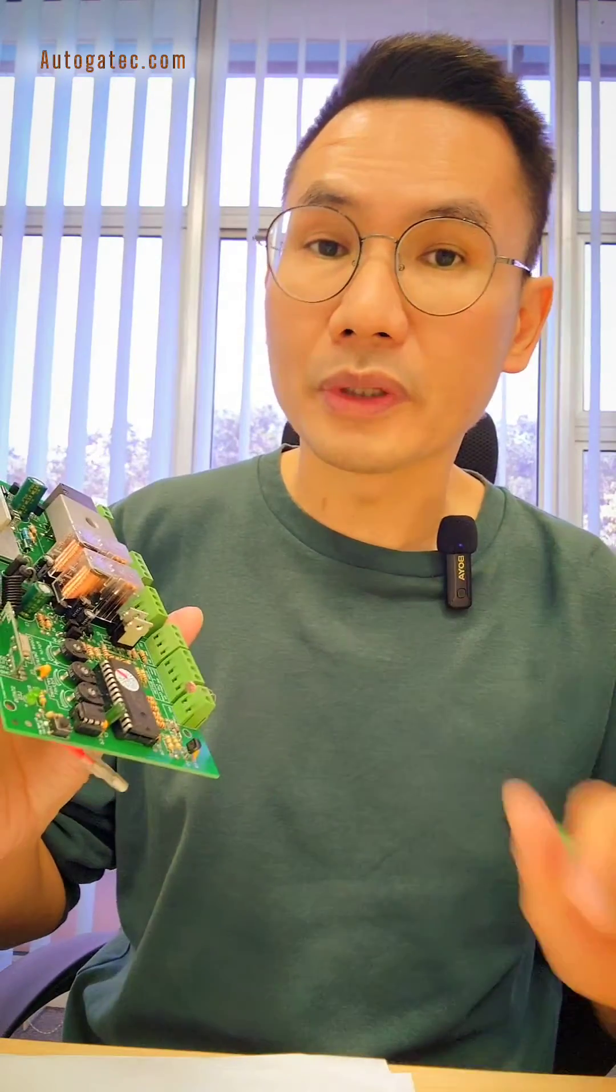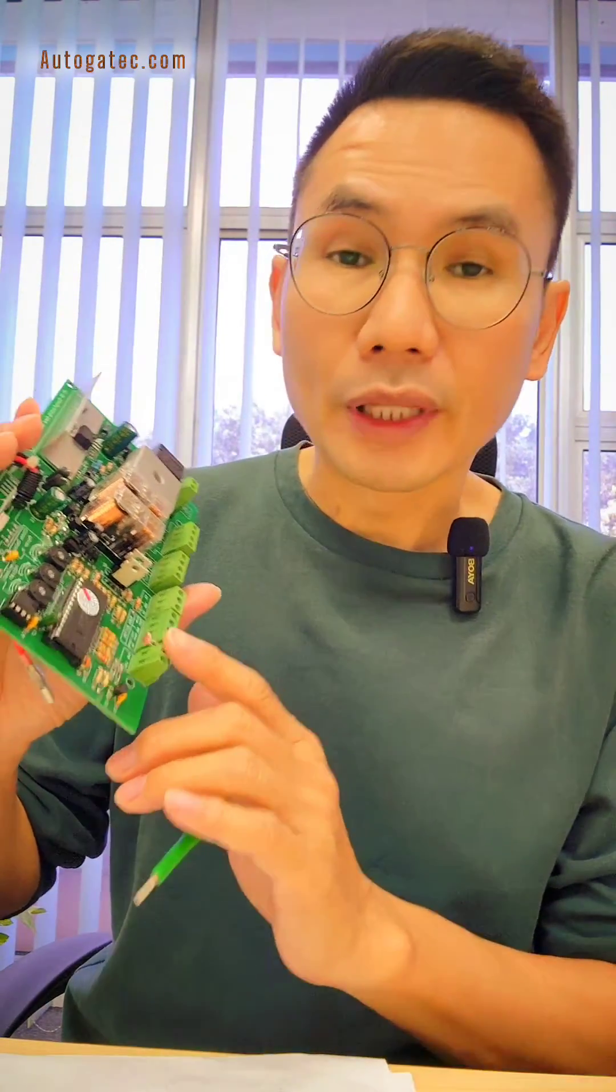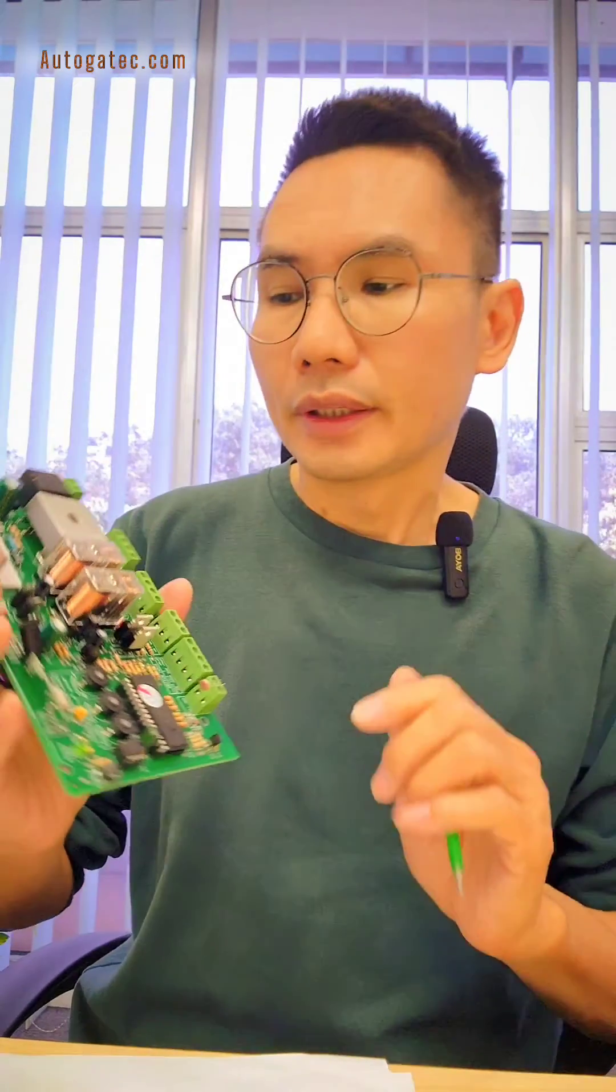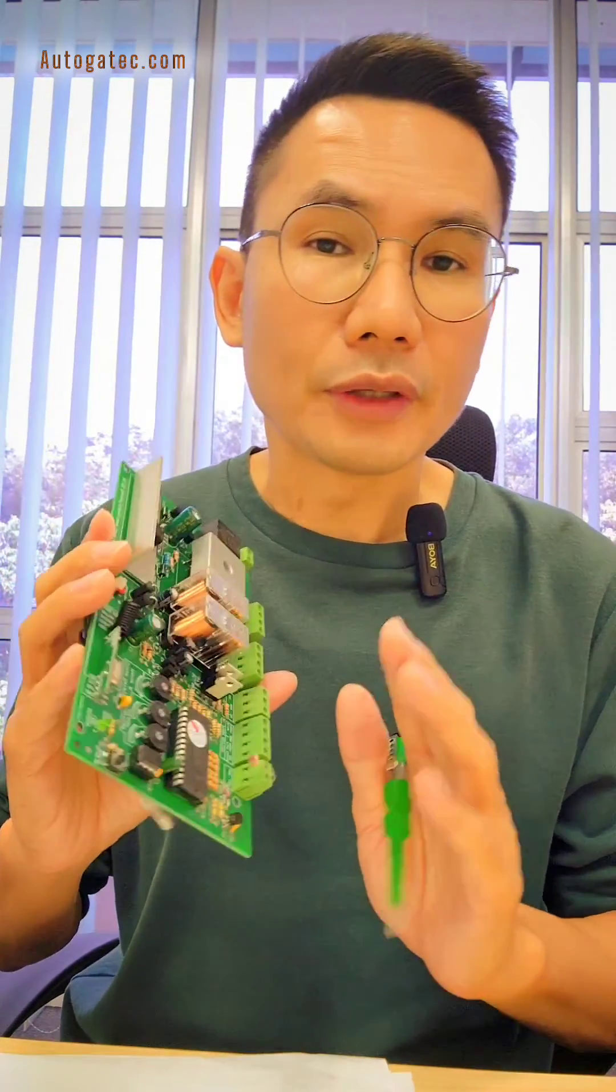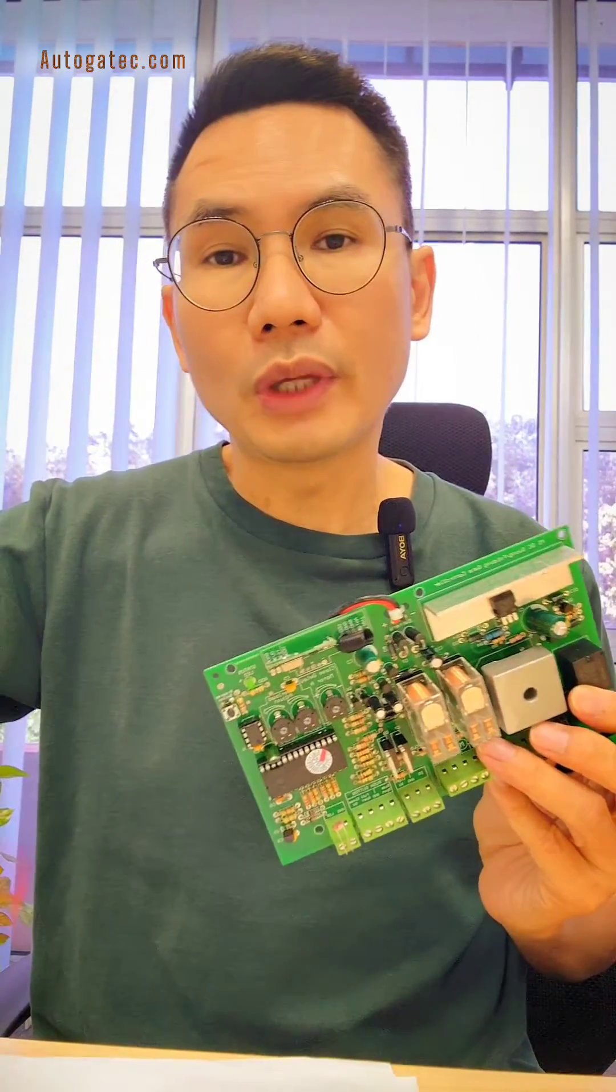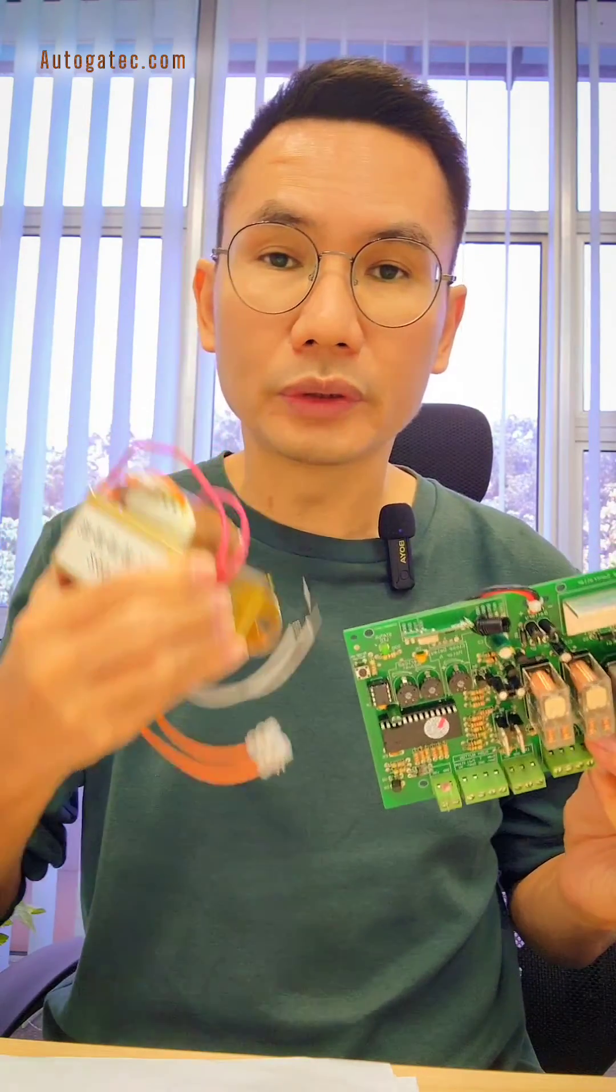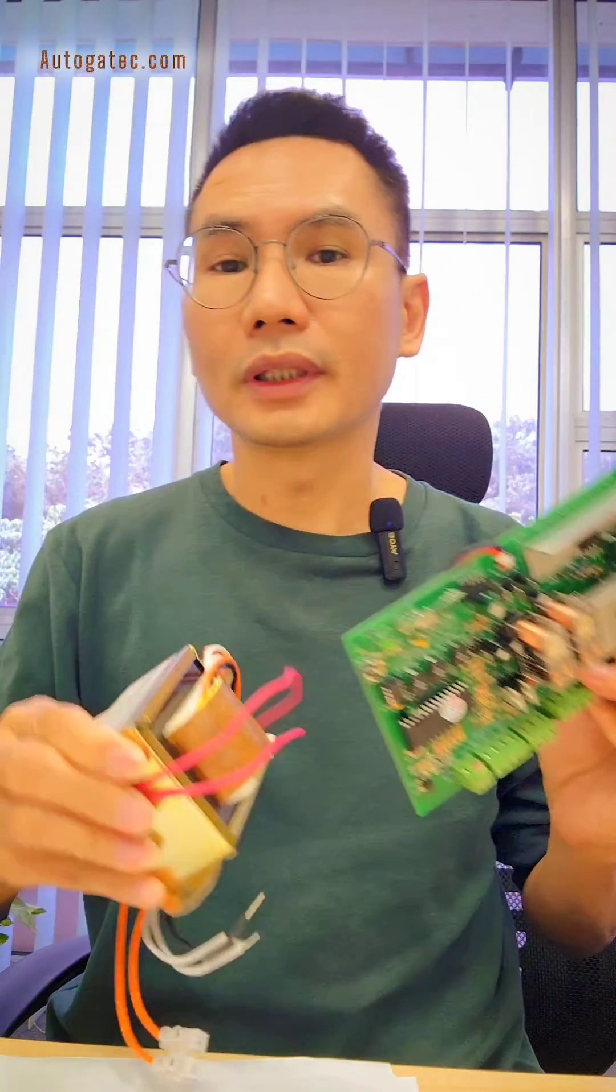This one is using low consumption, almost 18W only. They are also using DC. That's why we can prevent the lightning strike. Because we have a transformer to reduce the power, to reduce the voltage to the motherboard. We go through the transformer first.